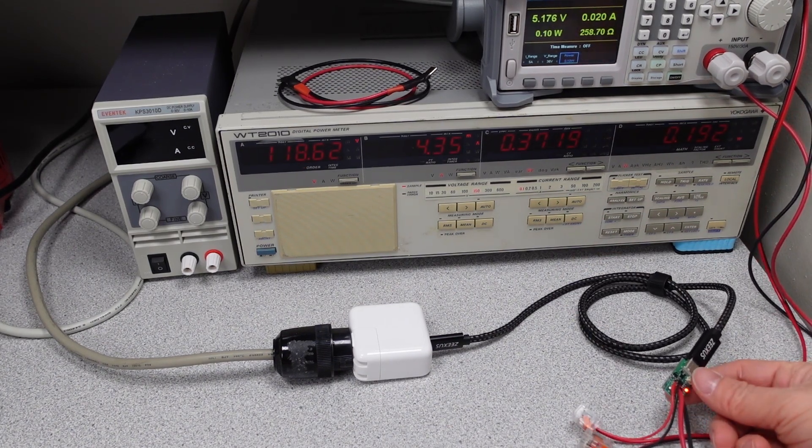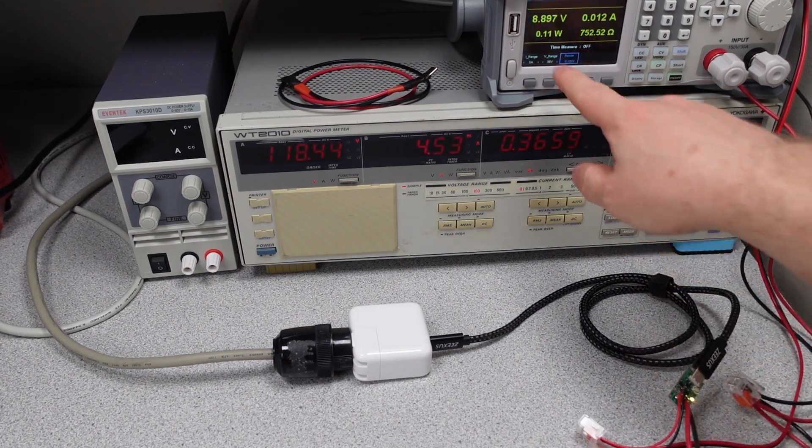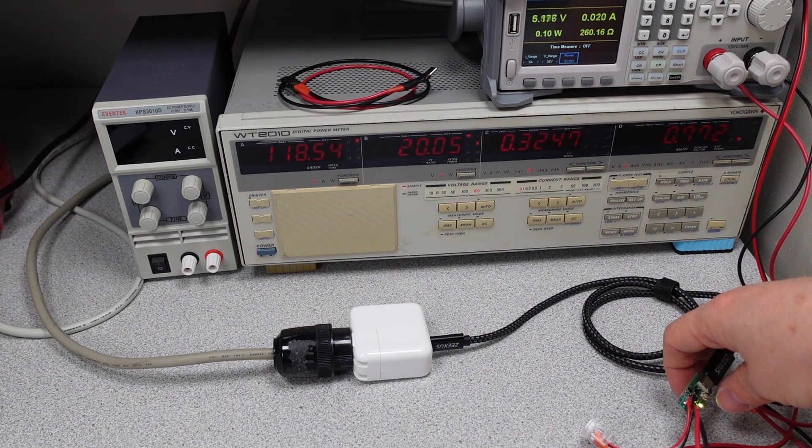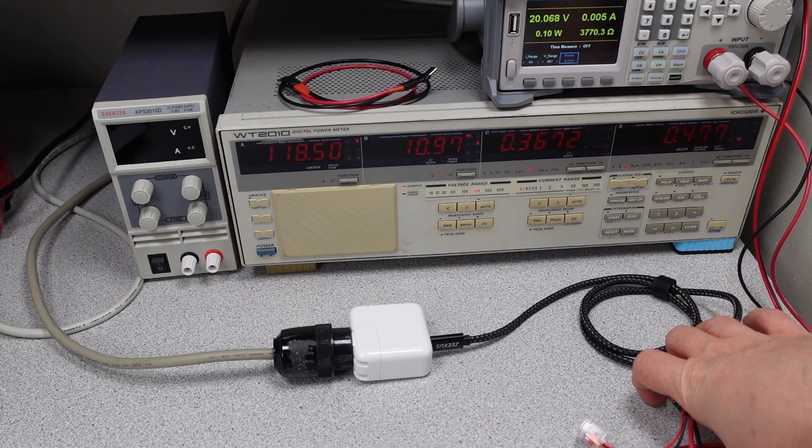Let's go ahead and check the different modes. So we got 5 volts right now. We got 9, 15, and 20. And that's it. So 5, 9, 15, and 20 volts.